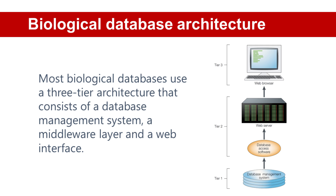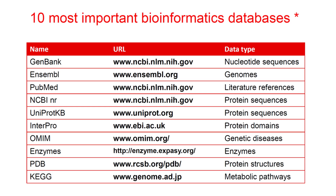Despite having highly different functions, almost all biological databases share a similar architecture. Each consists of three tiers of software: at the bottom is a database management system (DBMS) that manages a collection of facts; at the top is the web browser that transmits data requests to the database and renders the responses as web pages; and in the middle is a software layer that mediates between the DBMS and the web browser to turn data requests into database queries and transform query responses into HTML. In addition to the gene database and PDB, there are many more biological databases designed for different purposes. A table shows some of the most commonly used databases in bioinformatics that might help in your research.